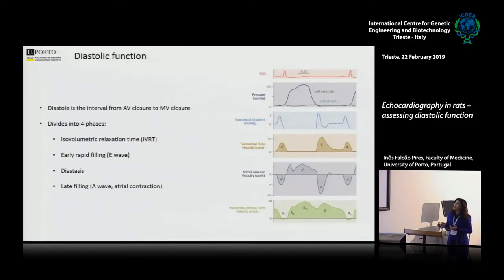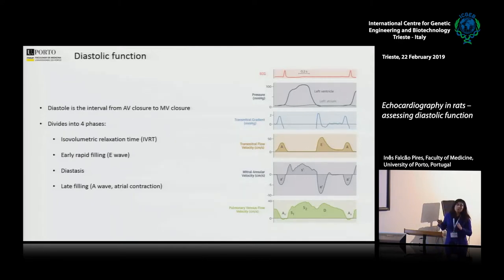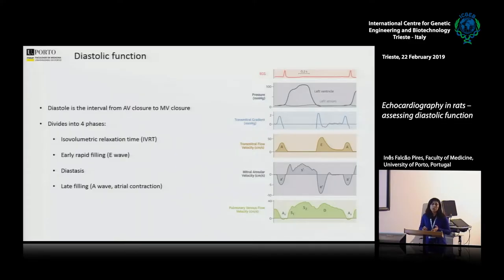At this time, you already know what diastolic function is. Diastole is mostly comprised by four phases: isovolumetric relaxation time, which sets the beginning of diastole; then early filling of the ventricle, because we have a big gradient between the left atria and left ventricle; then a third period where nothing really happens between the atria and ventricle because the pressures are almost the same; and finally the atria contracts and pushes the final part of blood inside the ventricle. That finishes diastole, and then we start with isovolumetric contraction — we are already on the systolic part.